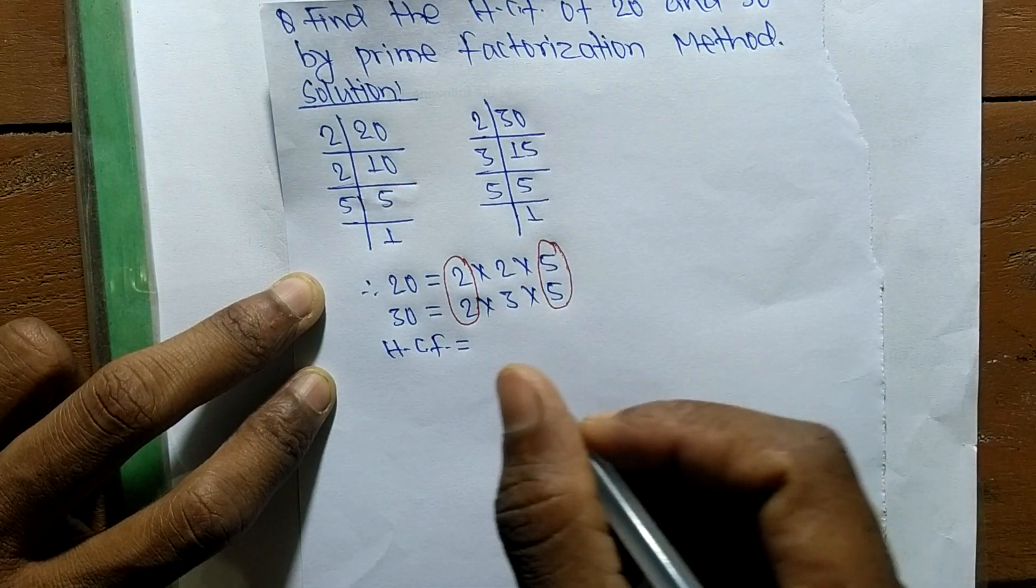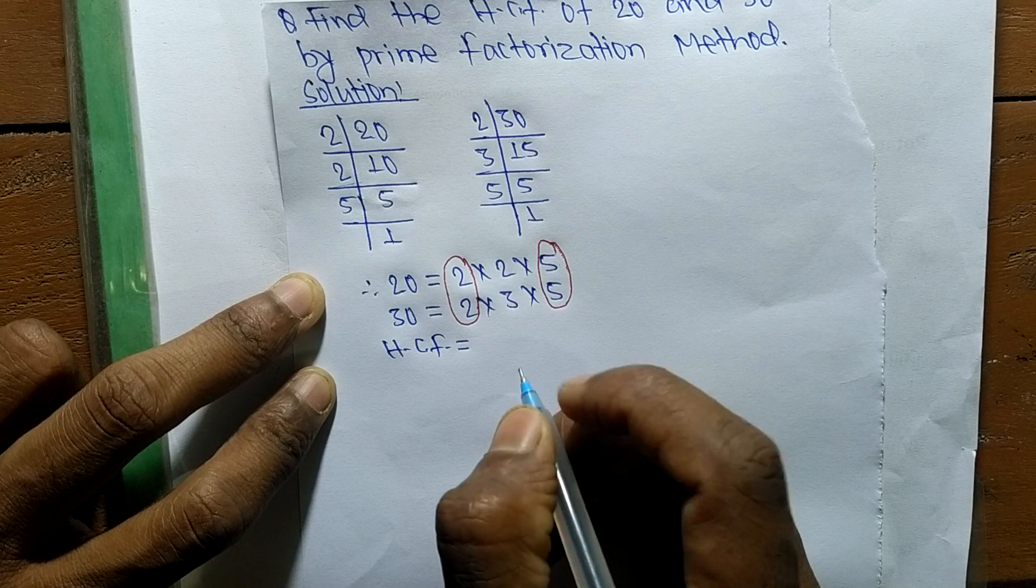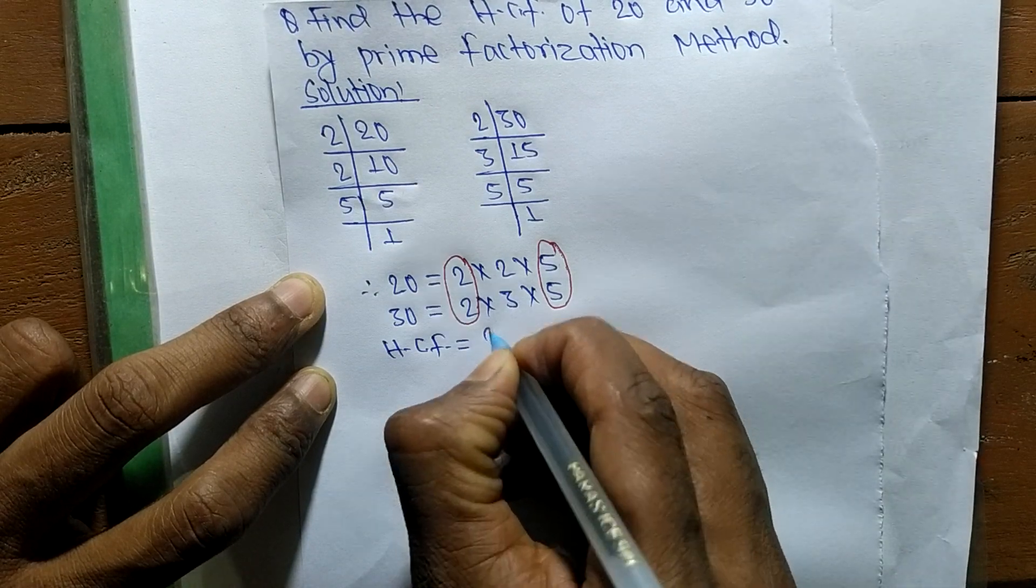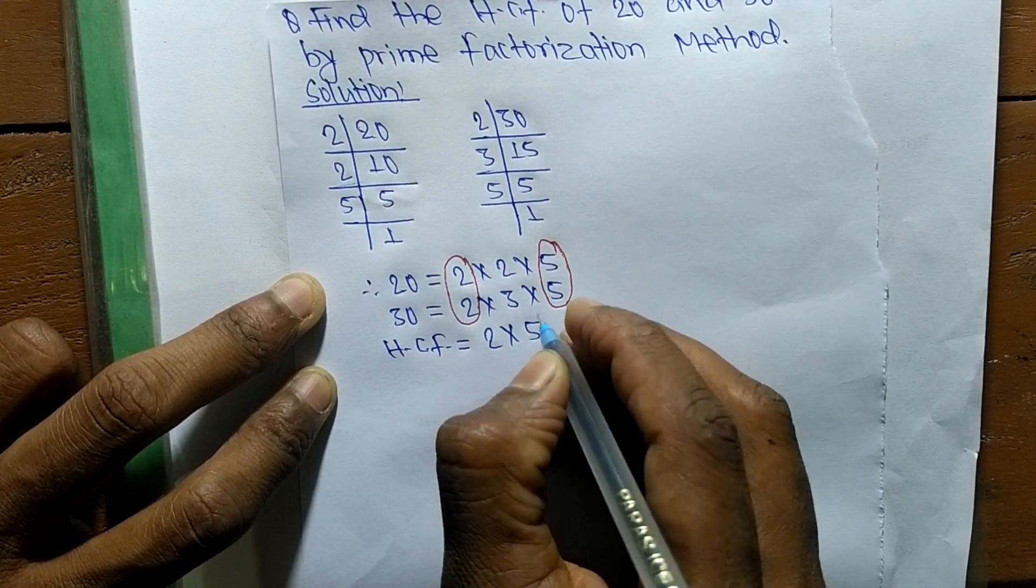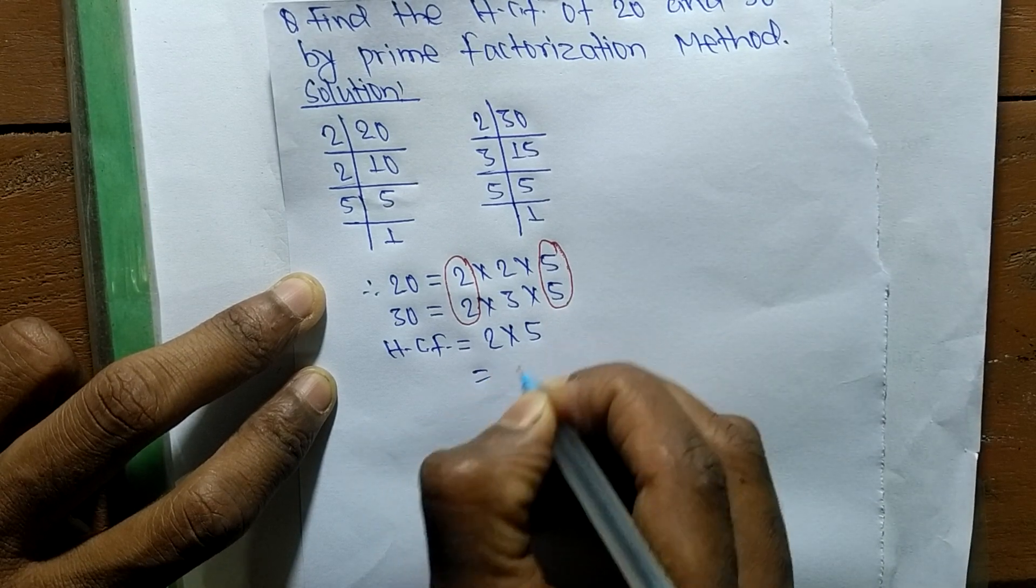So its HCF is the product of all the common factors which is 2 and 5. So 2 times 5 means it is 10.